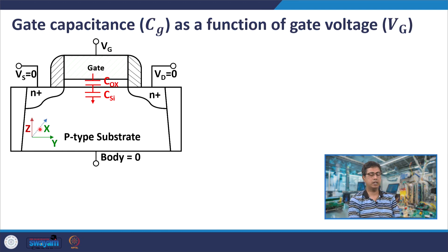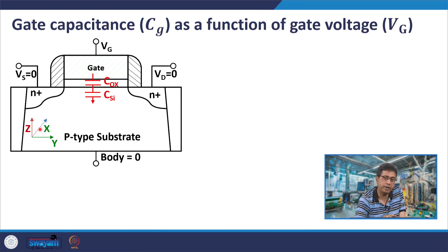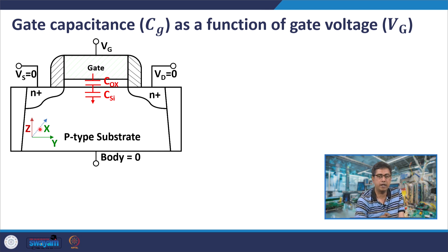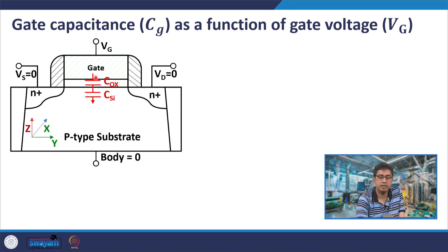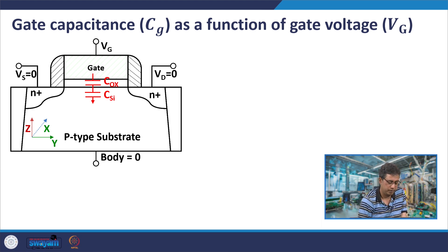Today we will discuss gate capacitance and use the function f that we had derived to understand it. The gate capacitance can be seen as a series combination of an oxide capacitance and a silicon capacitance. How do we justify this?